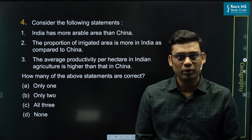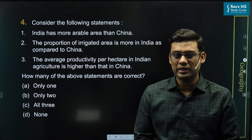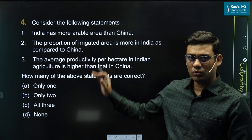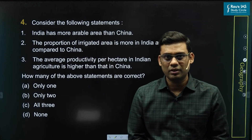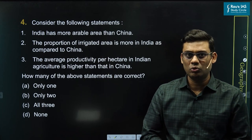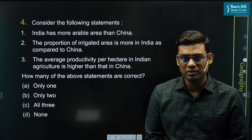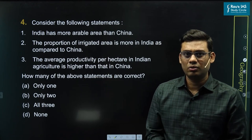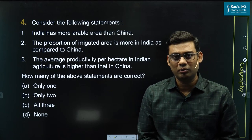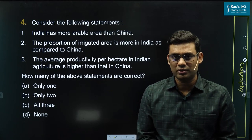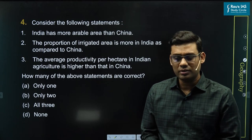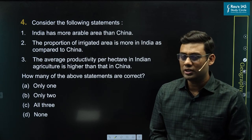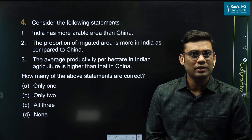Question number 4 from Set A. This question was from agriculture and was more fact-based. The reference to this can be found in an article that came in Financial Express — 'India can learn agri-policy lessons from China.'